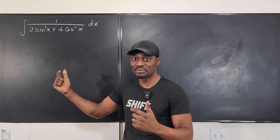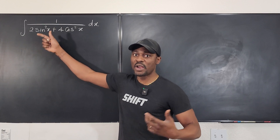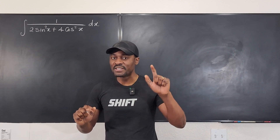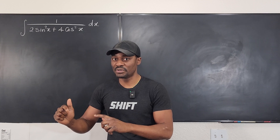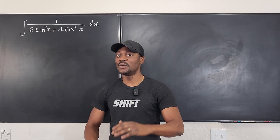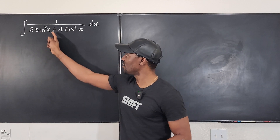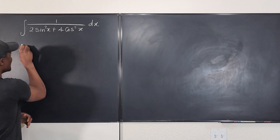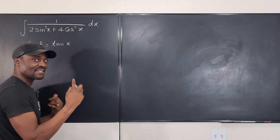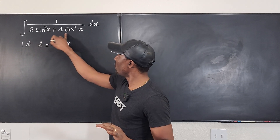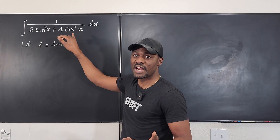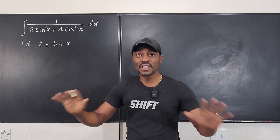Whenever you have a rational expression that has the square of sine or the square of cosine in the denominator, do not use the t equals tan(x/2) substitution because your work is going to get more complicated. Instead, you're going to use t equals tan(x). When the trig is squared, you use this substitution — let t equal the tangent of x. If the sine or cosine are just linear, maybe 2sin(x) plus 4cos(x), then you use t equals x over 2. That's the difference.